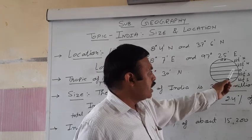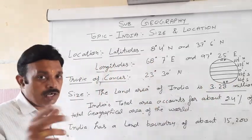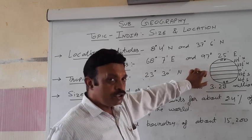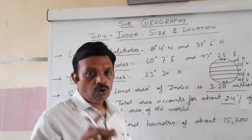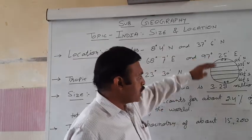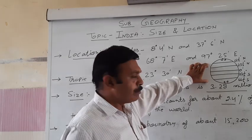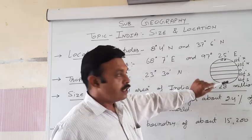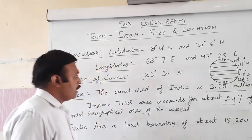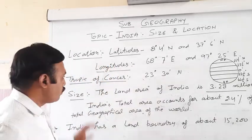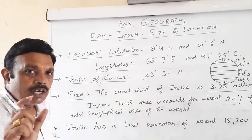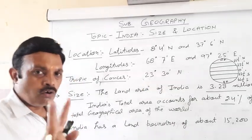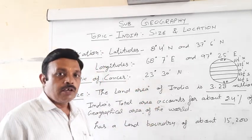Zero degree is the main latitude — the equator. The equator divides our earth into two equal parts. So the north portion and the south portion are the two main portions of our earth, and we have the North Pole and the South Pole as our two main important poles. Now we discuss about the Tropic of Cancer. The Tropic of Cancer is an important latitude of the earth.